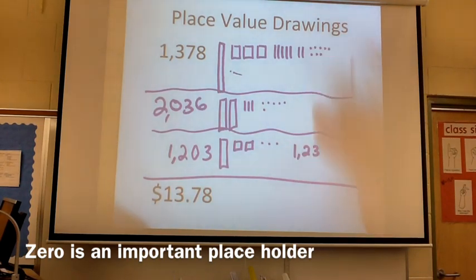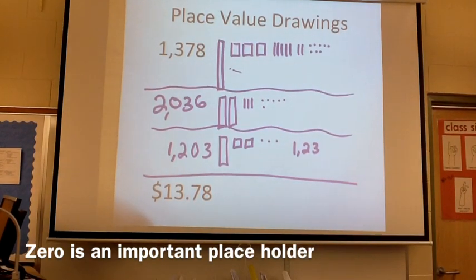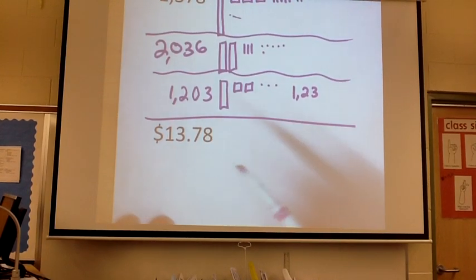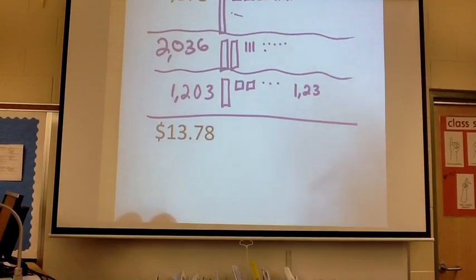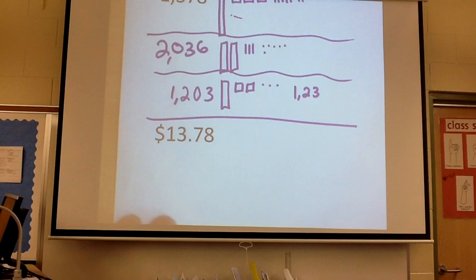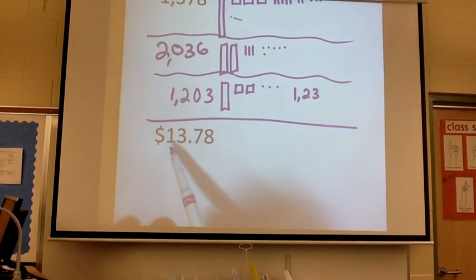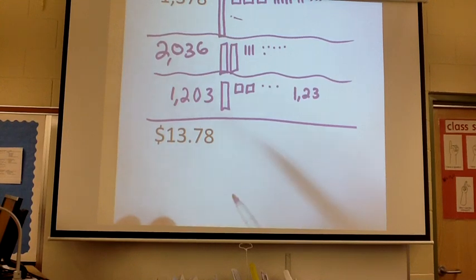Now, once they become comfortable with that, we're hoping that they'll be able to make the transfer to money. Instead of thinking of these as watermelons or cookies or whatever it is you're talking about in your problem, think of them as pennies. So here you can see we have 1,378 pennies.